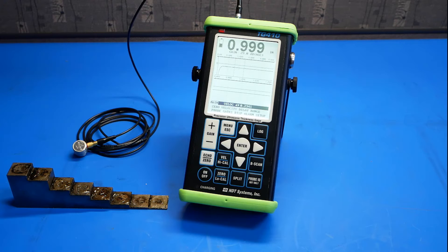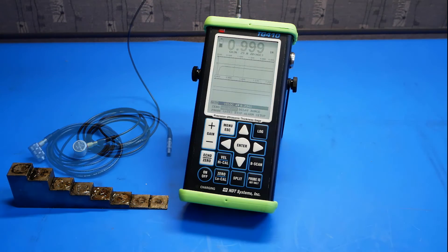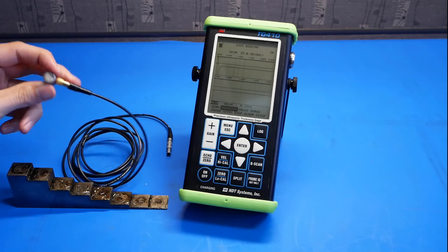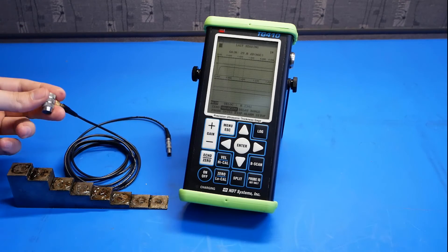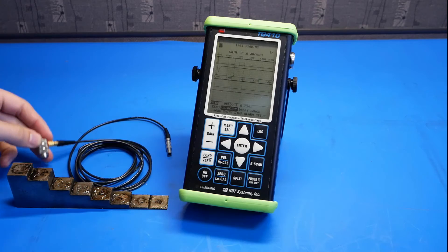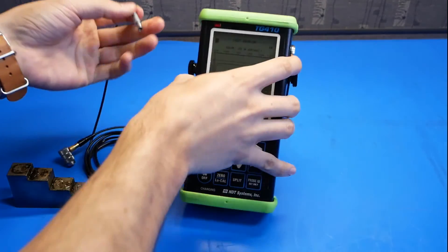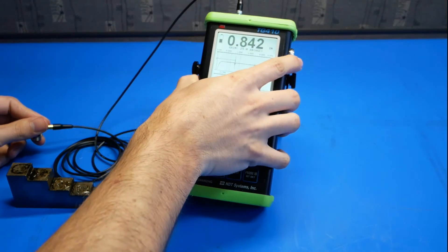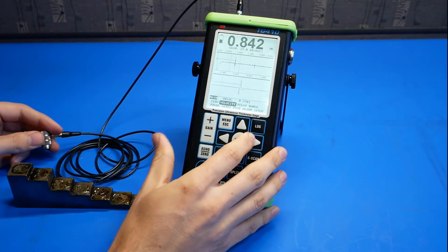Finally, let's look at the delay line transducer. Here we have a D11 delay line transducer. These are at 10 MHz. We'll plug the probe into the gauge as before, and we'll look for the setup.